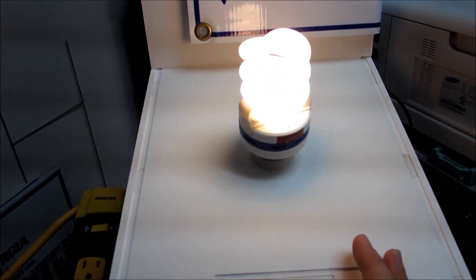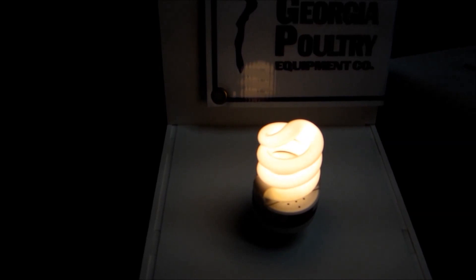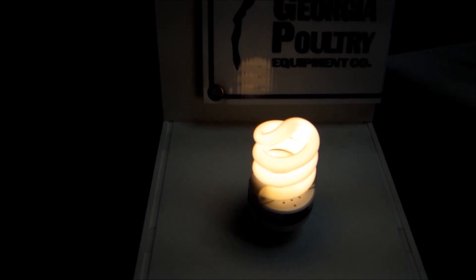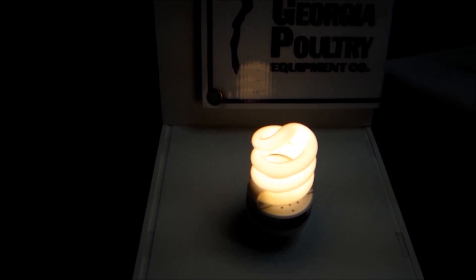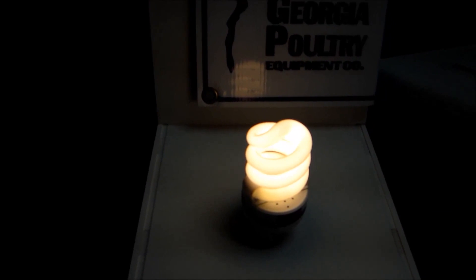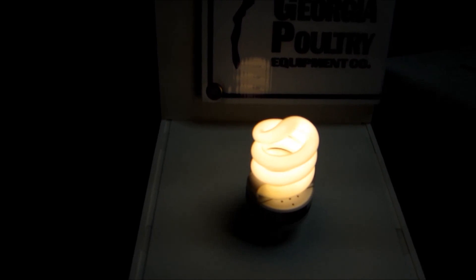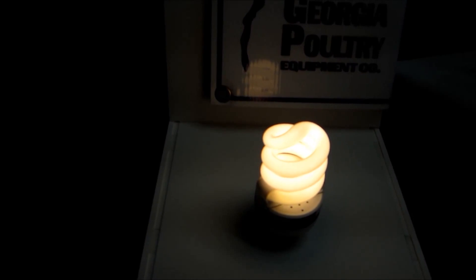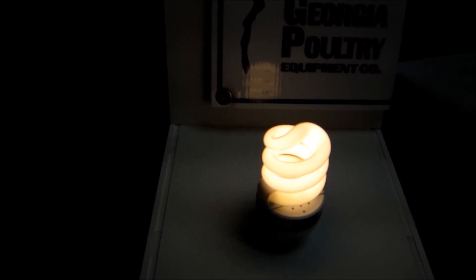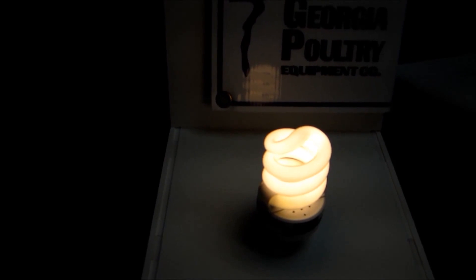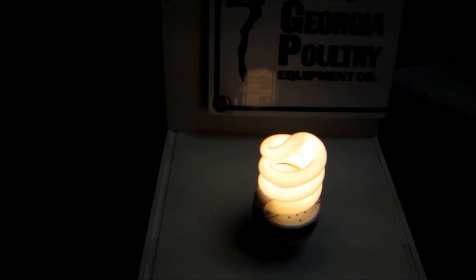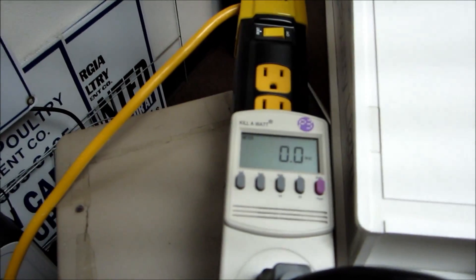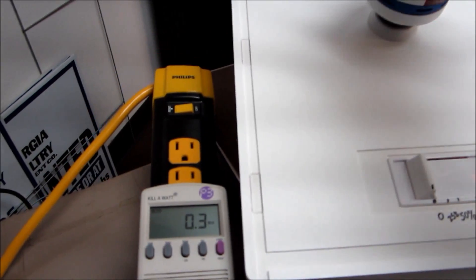Now on a CFL you can dim it down until basically it starts to flicker. Once you have hit the flicker point, that is when you start to damage CFL bulbs. So the life lamp has a microprocessor inside the ballast that is supposed to turn off the bulb before it starts to flicker to help preserve the life of the bulb. In this case you can see as I turn it down it is just starting to flicker now and then it turns off. So that is the CFL bulb dimmed down.